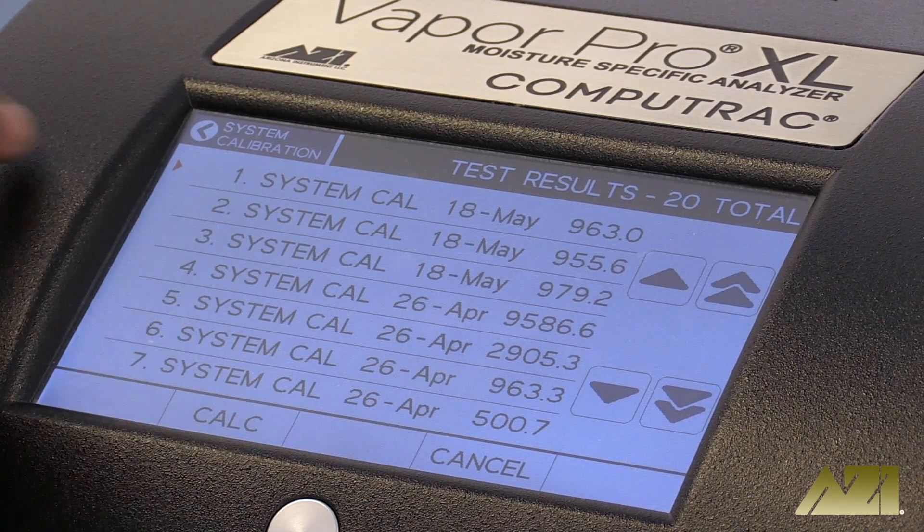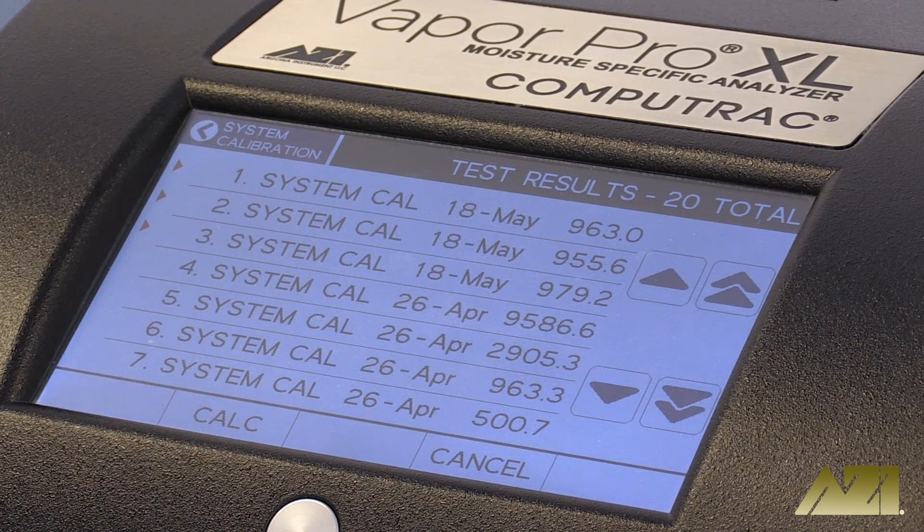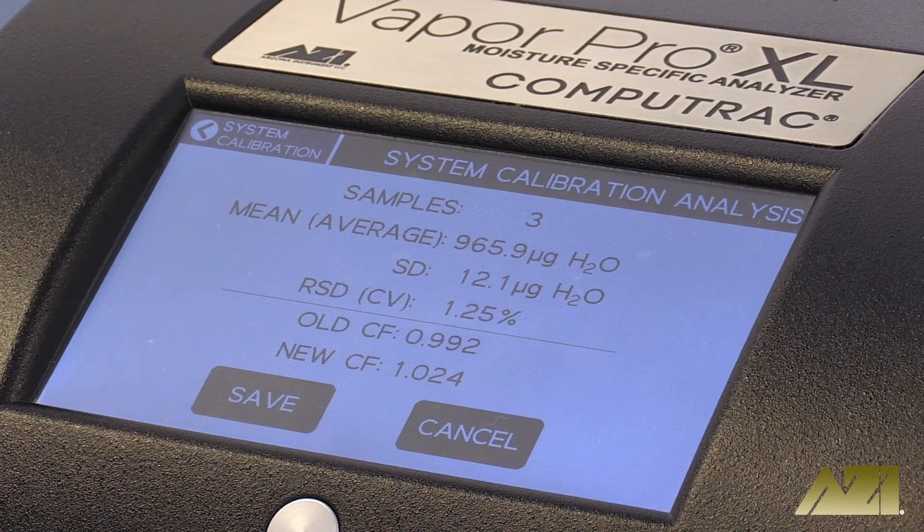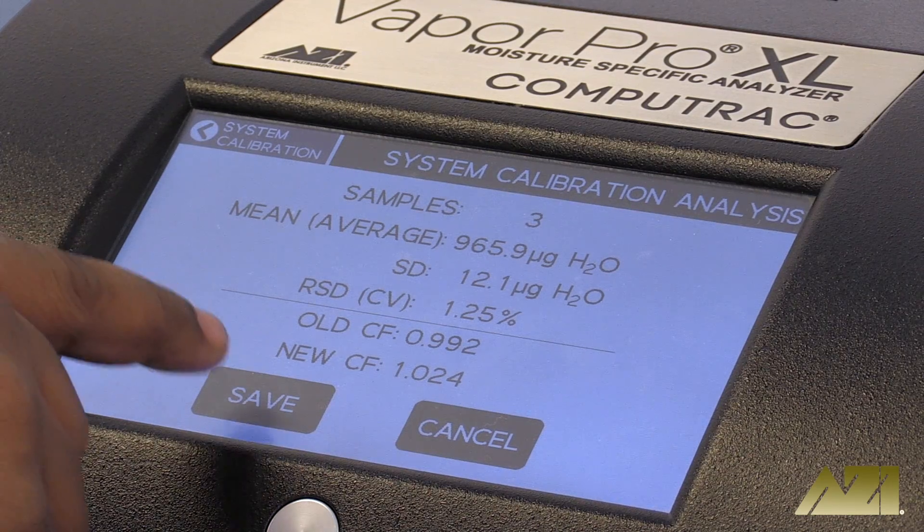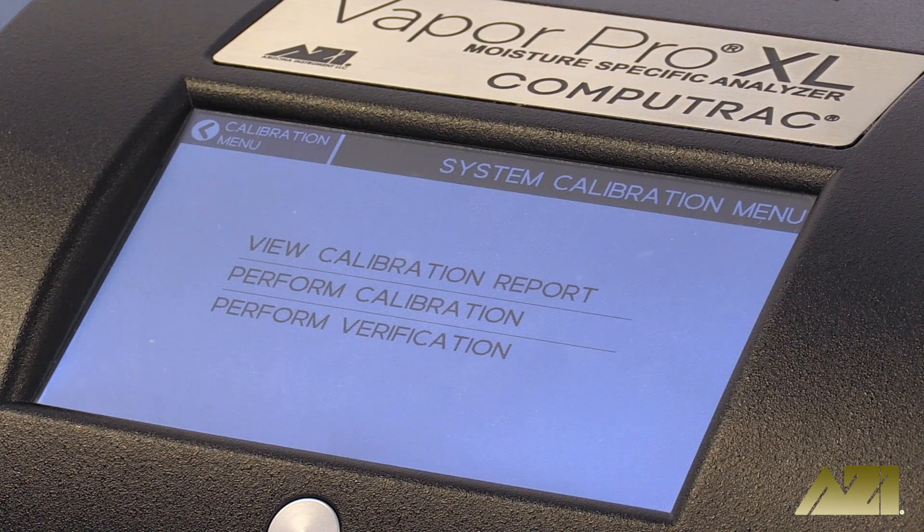We recommend that you perform statistical analysis using at least three test results once a week and perform a one microliter test each day that you plan on using the instrument. This helps verify that the instrument is functioning properly.